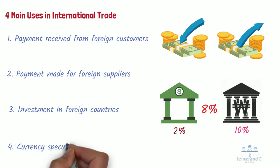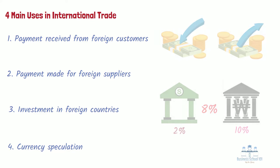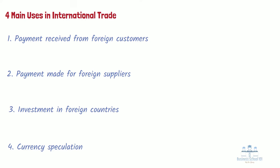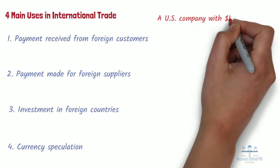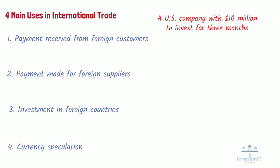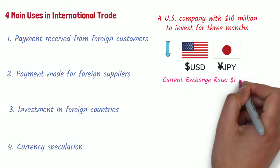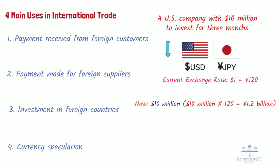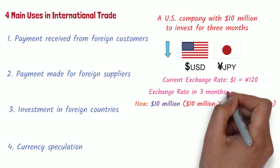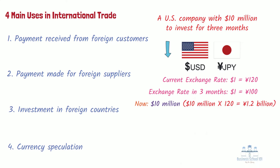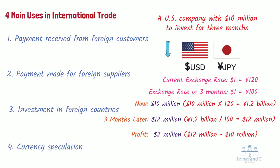Fourth, currency speculation. Currency speculation typically involves the short-term movement of funds from one currency to another in the hopes of profiting from shifts in exchange rates. Consider a US company with $10 million to invest for 3 months. The company expects the value of the dollar to depreciate against the yen. The current dollar-to-yen exchange rate is $1 to 120 yen. The company exchanges its $10 million into yen, receiving 1.2 billion yen. Over the next 3 months, the dollar depreciates until $1 equals 100 yen. The company exchanges its 1.2 billion yen back into dollars and finds it has $12 million — a $2 million profit in 3 months on an initial investment of $10 million.